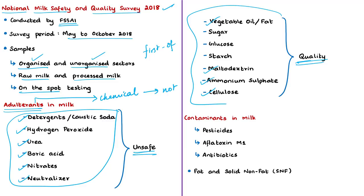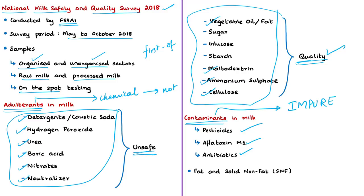As part of this survey, milk samples were tested for the presence of these 13 adulterants and also checked for three contaminants: pesticides, aflatoxin M1, and antibiotics. Contaminants are undesirable substances not intentionally added but unavoidably present due to environmental contamination or food production and handling practices. Milk samples were also checked for fat and SNF — solid non-fat. The solid non-fat portion of milk consists of proteins such as casein and lactoalbumin, carbohydrates like lactose, and minerals like calcium and phosphorus.